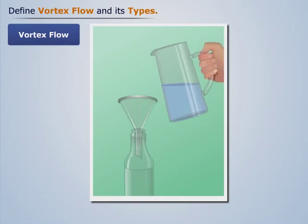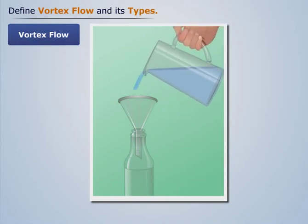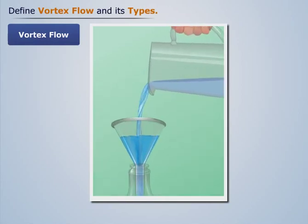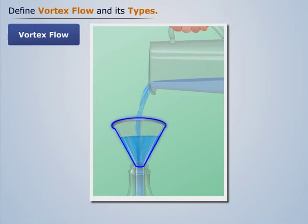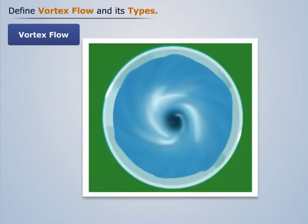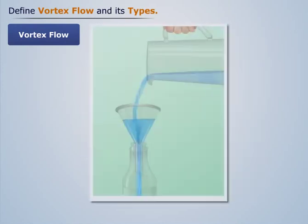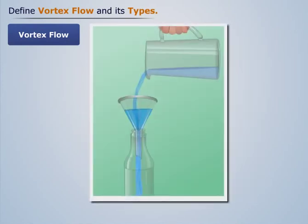When we pour water, we see that water moves in a curved path in the funnel and then drops down in the bottle. Such type of flow is known as vortex flow.